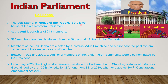Now, Lok Sabha. Lok Sabha or House of the People is the lower house of India's bicameral legislature. As the name suggests, Lok Sabha means Assembly of the People. Lok Sabha represents the people of India. Constitution limits the membership of Lok Sabha to 552. At present, 543 members are there in Lok Sabha. 530 members are directly elected from the states and 13 from Union Territories.